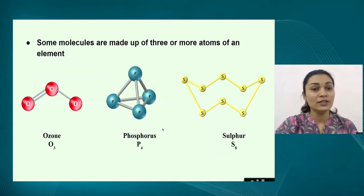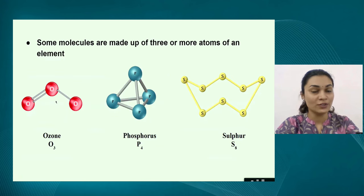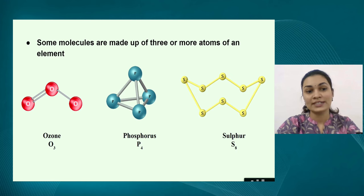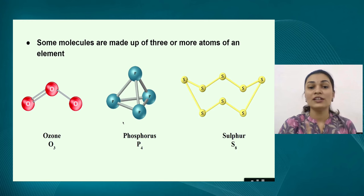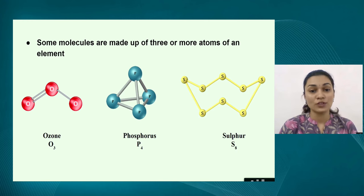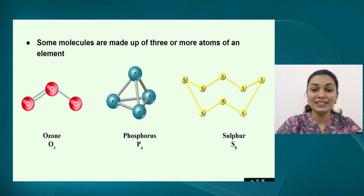The third category is when molecules are made up of three or more atoms of an element. The first example is ozone — we all have heard about the ozone layer. One molecule of ozone is actually three oxygen atoms combined together. The next example is phosphorus: to make a single molecule of phosphorus, you need four phosphorus atoms. The last example is sulfur — a sulfur molecule has eight sulfur atoms, and you can see it is in the shape of a crown, also known as a crown shape.